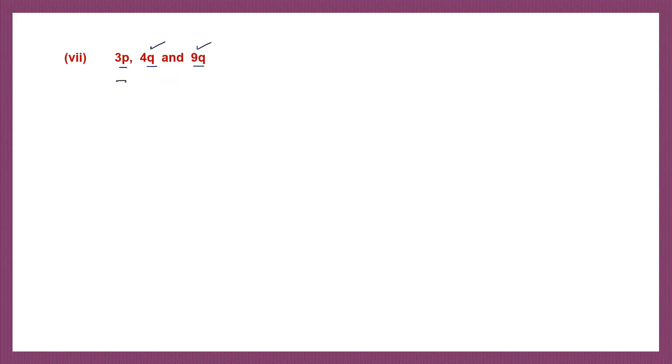Question 7: 3p, 4q, and 9q. So I can only add the like terms, that is 4q and 9q. I will write 3p as it is, then plus — let me add the numbers separately — 4 plus 9q. So what do I get? 3p plus 4 plus 9 is 13, so 13q. This is my answer.